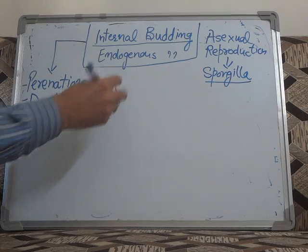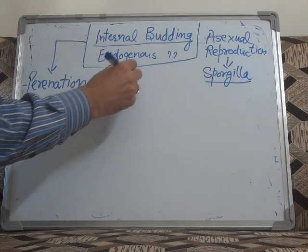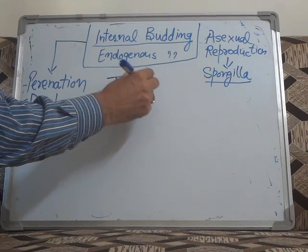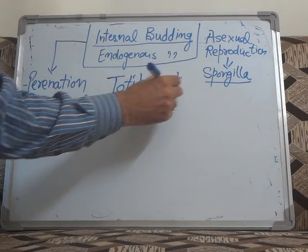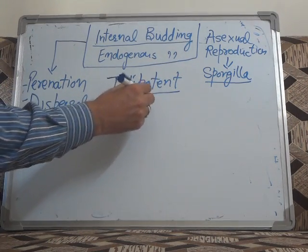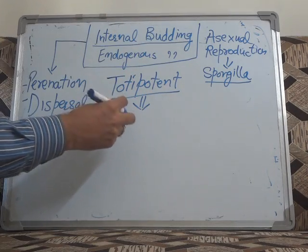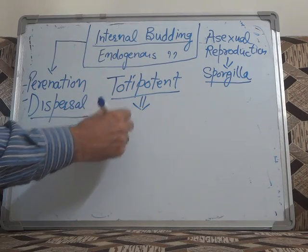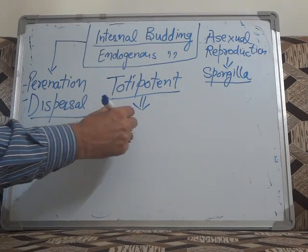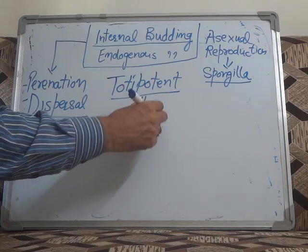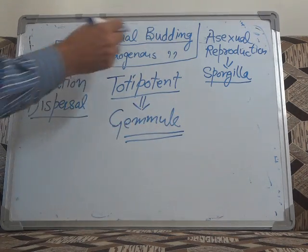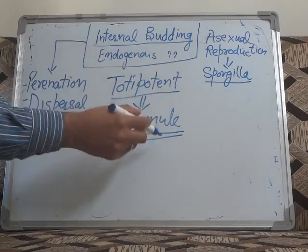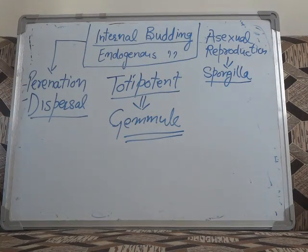During unfavorable conditions, the totipotent cells of Spongilla will form the internal bud, and that internal bud is known as a gemmule. The internal bud which is produced in Spongilla is produced in the form of a gemmule.